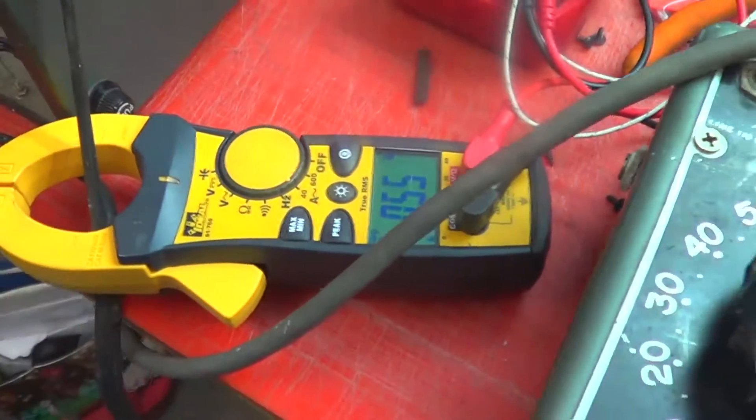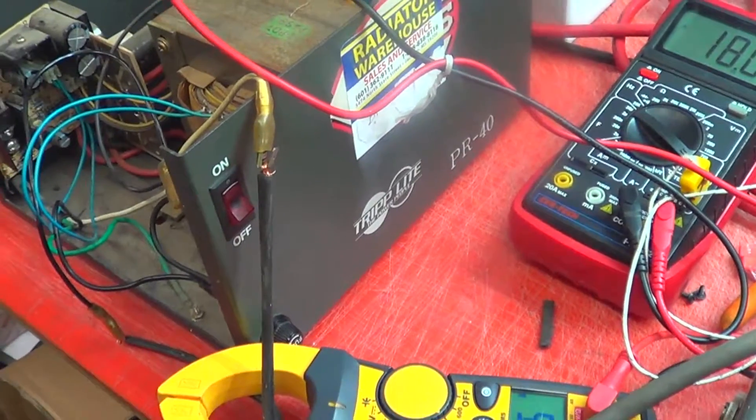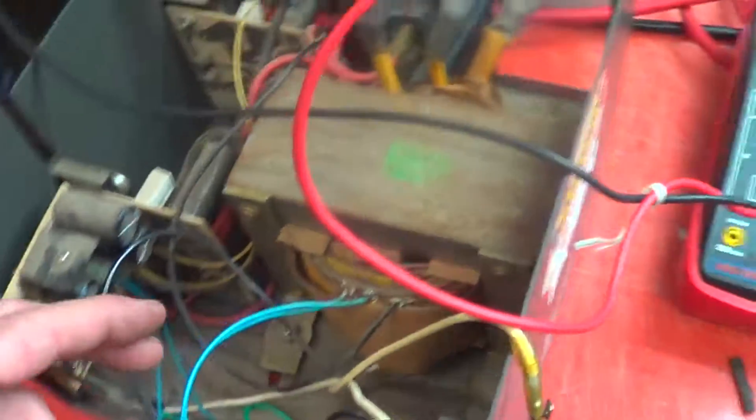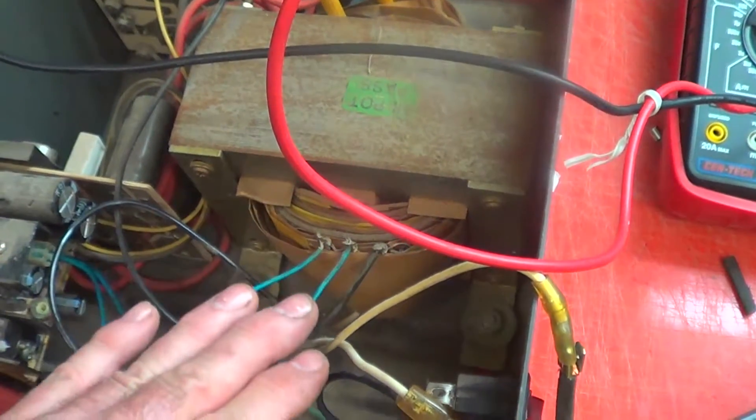Now we're not drawing the 3 amps, so at least the main part of this transformer is working. Now what I should do is go through here and check, put some click leads and check what the output is on this side.